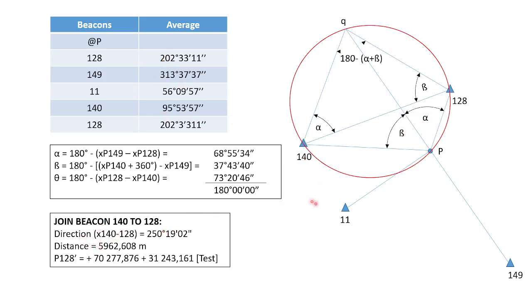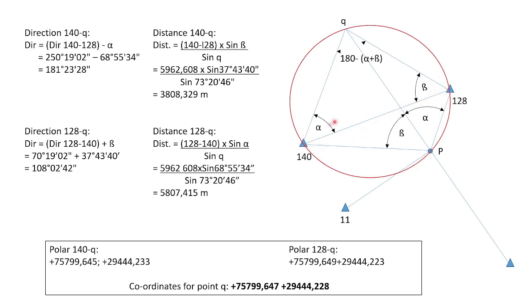What you do is calculate your join from beacon 140 to 128. These are two coordinates you do know, so you can easily calculate your direction and distance using joins, which I explained in another video. I showed you the test values — if these test values are very similar to your original 128 coordinates, then you know you've done it correctly. Now that we have this direction and distance, we can work out what is our 140 to Q direction. So 140 to Q will be 140 to 128 minus alpha, and that gives us that direction. For the distance, we use this formula: your distance times the sine of theta over the sine of Q, and that gives your distance 140 to Q.